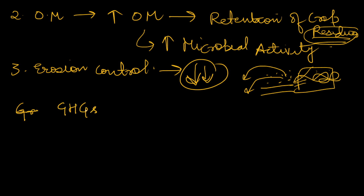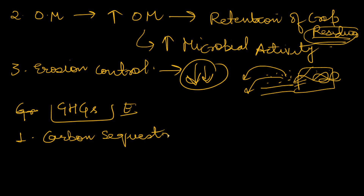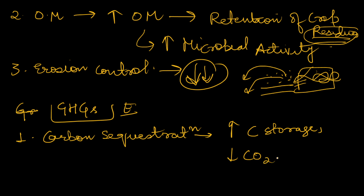Now regarding greenhouse gas emissions from conservation tillage — first, it plays a role in carbon sequestration. There is increased carbon storage in soil, which reduces CO2 emissions. The crop residues decompose on the soil surface and the carbon in those residues is added to the soil. Because there is no deep tillage or disturbance, the carbon stored in these residues is not eroded or leached, thus enhancing carbon sequestration and reducing CO2 emissions.